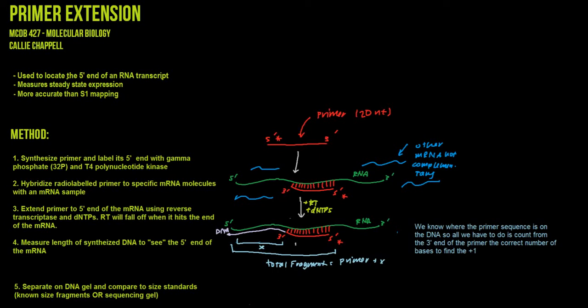So why do we use primer extension? Well, first we use it to locate the 5' end of an RNA transcript. And we can't map the 3' end with primer extension because we're ultimately going to use reverse transcriptase, which only goes 5' to 3'. The second thing it does is measure steady state expression.